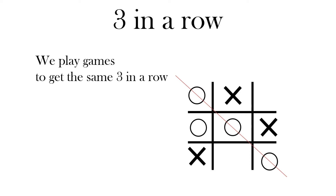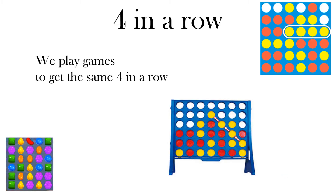We commonly use phrases like 'consecutive' or 'in a row'. For example, in tic-tac-toe the winner is someone who gets three in a row. Similarly, in Connect Four we get four in a row.